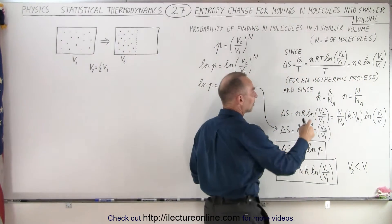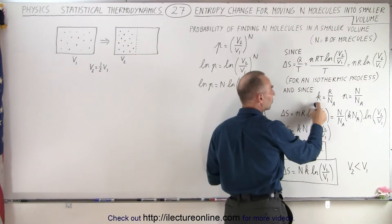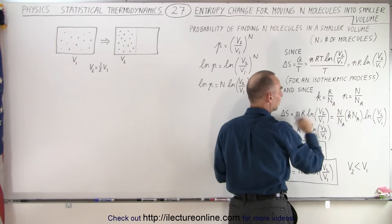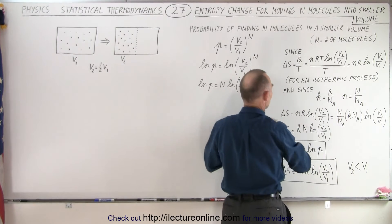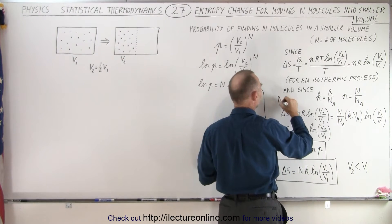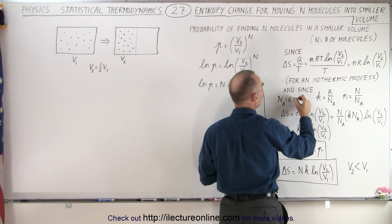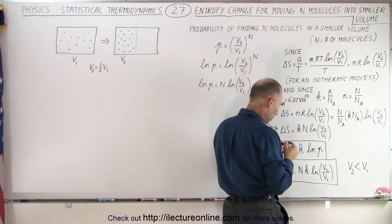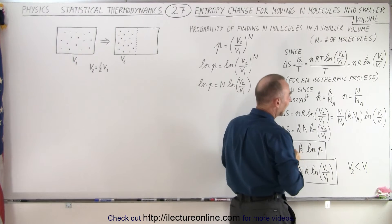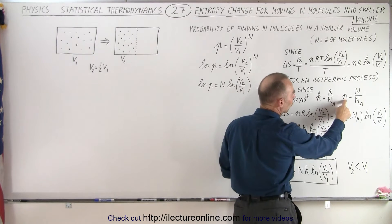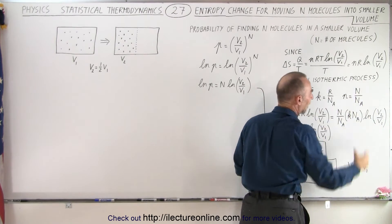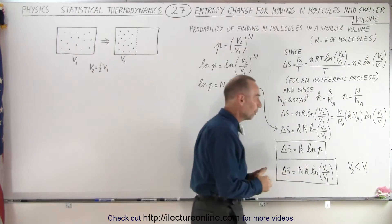Now, the Boltzmann constant k_B equals the gas constant R divided by Avogadro's number N_A, which is 6.02 × 10²³. The number of moles is simply the number of molecules divided by Avogadro's number.